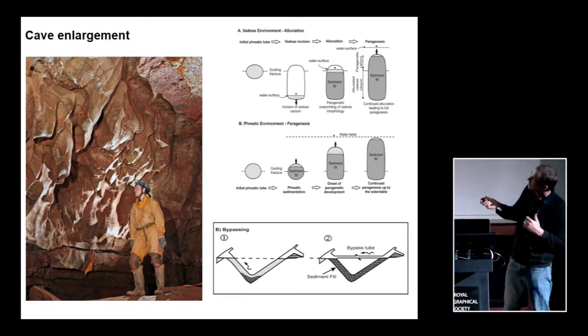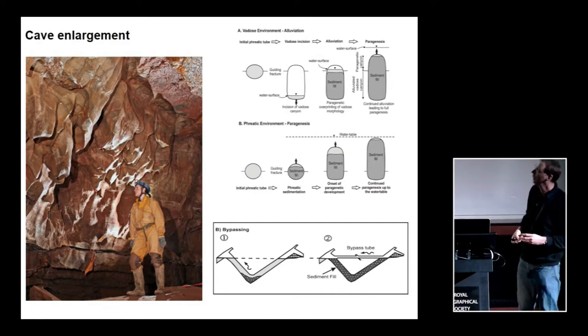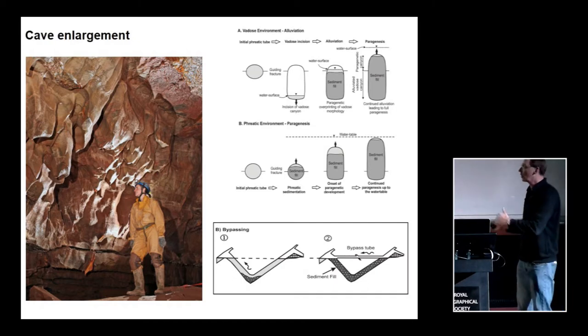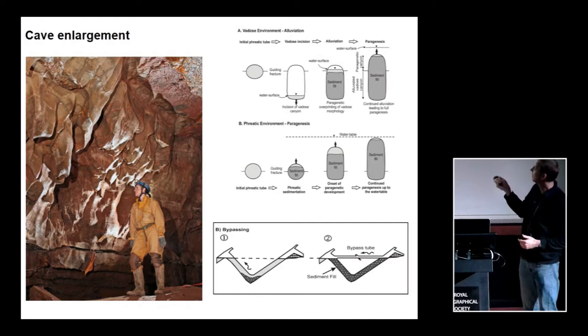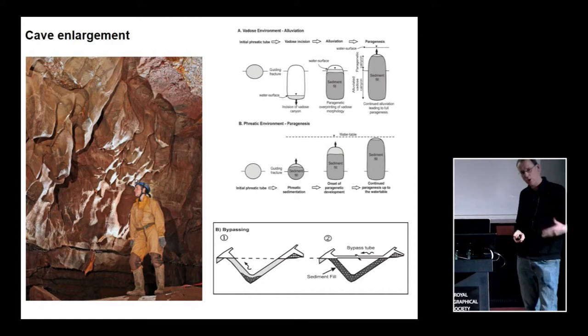This here is Ogof Ffynnon Ddu top series. And you can see all these lovely phreatic, tubey, pendant-y things in the passage wall. And these probably form when this passage was filled with sediment, probably during one of the last glaciations, probably the Anglian glaciation, and water flow between the sediment fill and the rock wall dissolved out a series of tubes. And since then, the sediment's been flushed out again. You can also get bypassing, if you've got a phreatic loop like this, and that gets blocked up with sediment, you can get passages going around trying to avoid the blockage. So there's a lot of things that could happen to a cave even after it's formed to modify it.